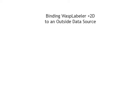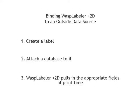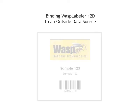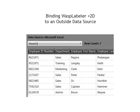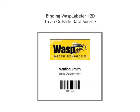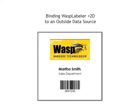Now that you can create a basic label, let's try binding a data source to an object. This allows you to create a label, attach a database to it, and then let WASP Labeler Plus 2D pull information from the database when printing. For example, if you're creating employee badges, you can create a template badge and then bind a database containing all the employee names, departments, and ID numbers to the objects on your label. When printing, WASP Labeler will pull the information from the database and place it in the associated barcode or text box on the badge.